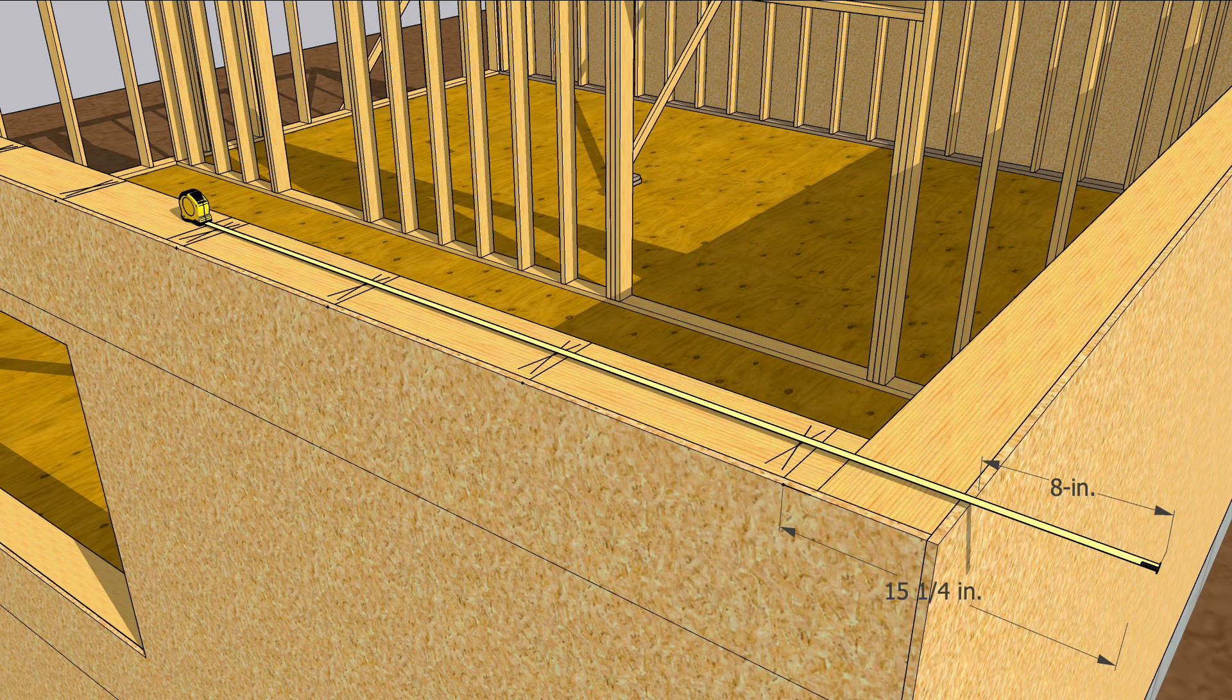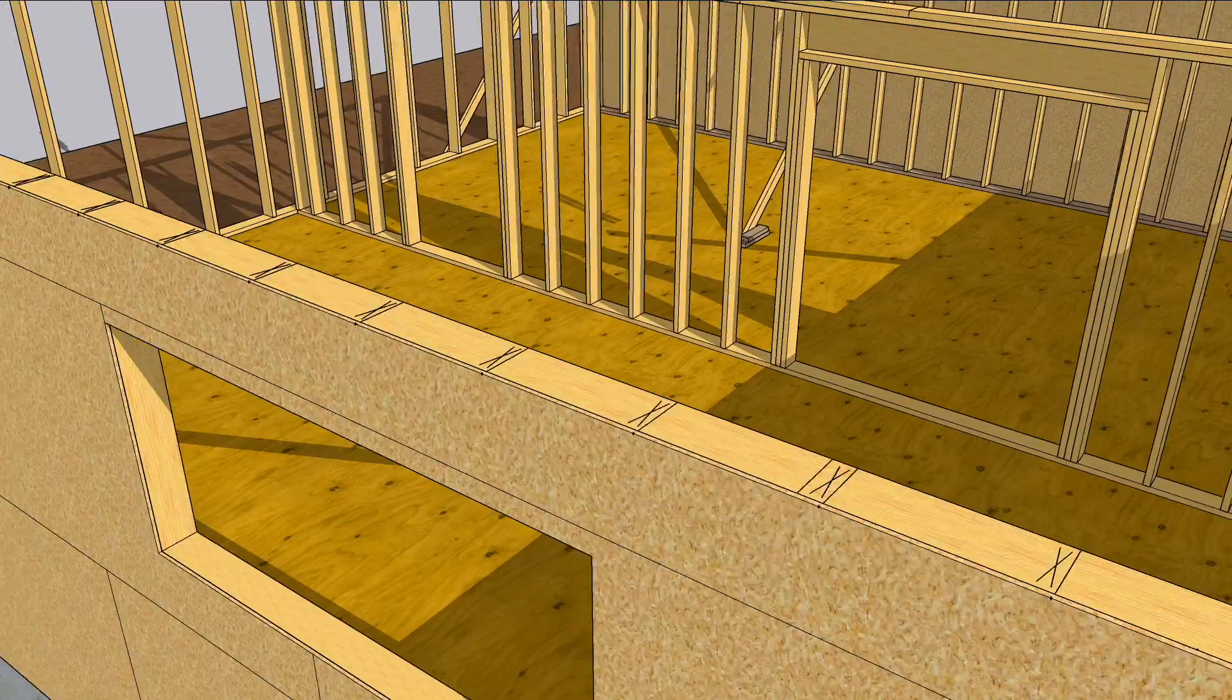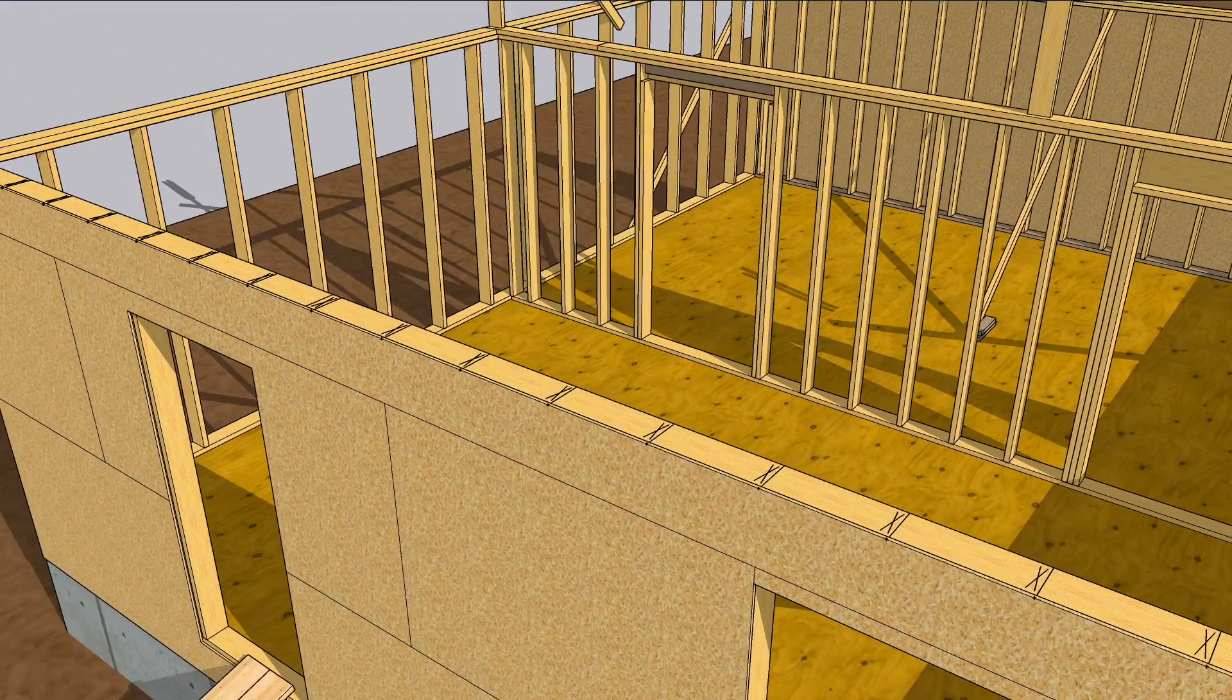Again, 3 quarters of an inch shy of the red marks on your tape. Now every rafter will be 16 inches apart, and the 8 foot sheets of plywood will break down the centers of the rafters.